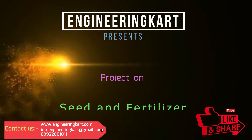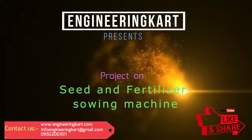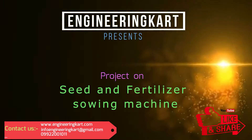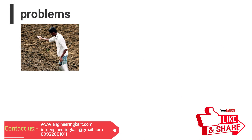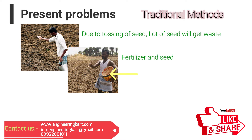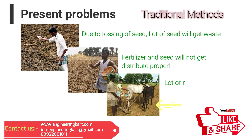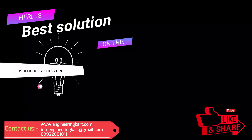In this video we will see the technical project on seed and fertilizer sowing machine. Majority of farmers are sowing the seed and fertilizer manually and separately. There are different traditional methods used. Some of the drawbacks are: due to tossing of seed and fertilizer, a lot will get wasted, seed and fertilizer will not get distributed properly, and currently a lot of resources, labors and equipment are required.